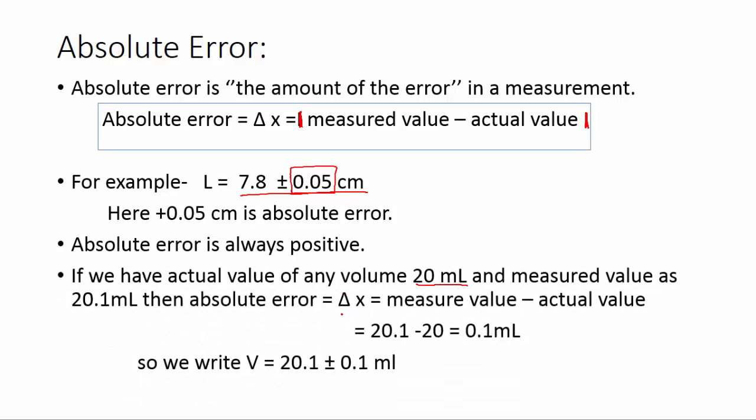If we have actual value of any volume that is 20 mL and measured value 20.1 mL, then absolute error would be the difference between these two values, which is 0.1 mL. So we can write volume as V = 20.1 ± 0.1 mL.